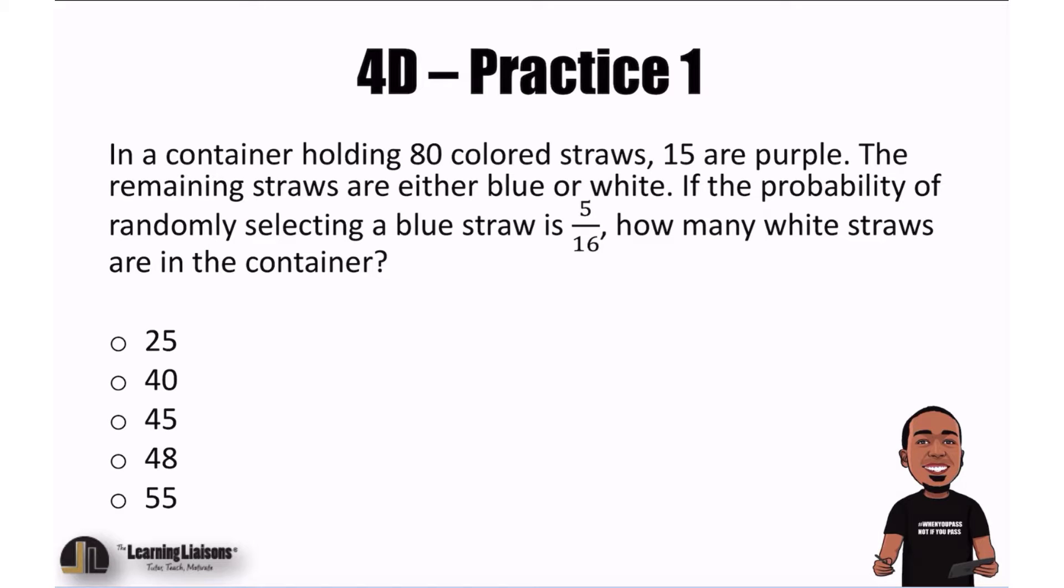In a container holding 80 colored straws, 15 are purple. The remaining straws are either blue or white. If the probability of randomly selecting a blue straw is 5 out of 16, how many white straws are in the container?